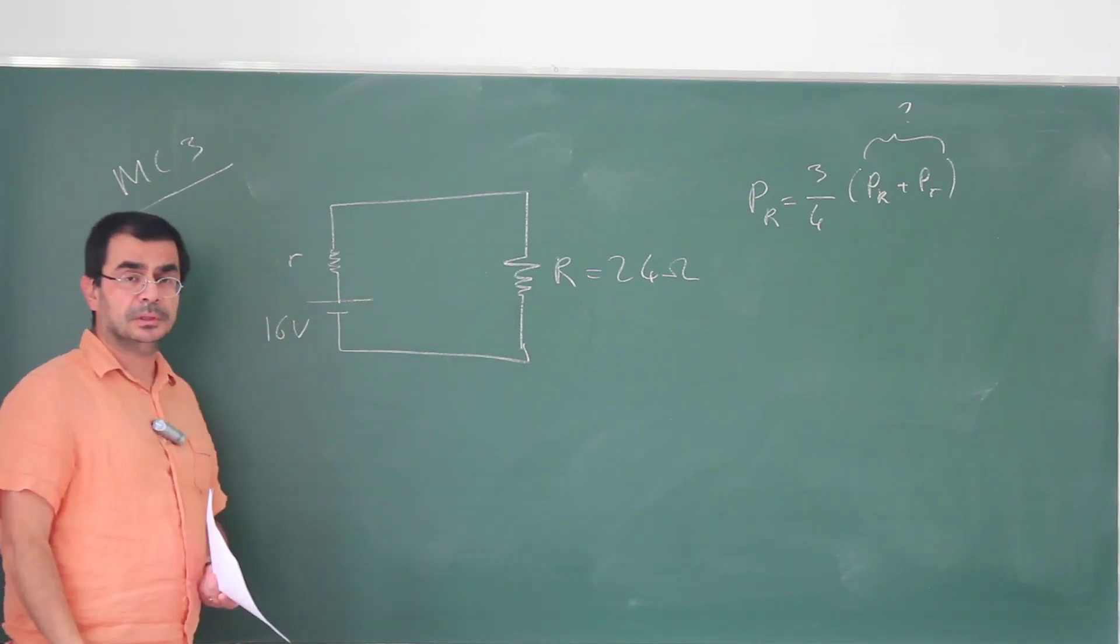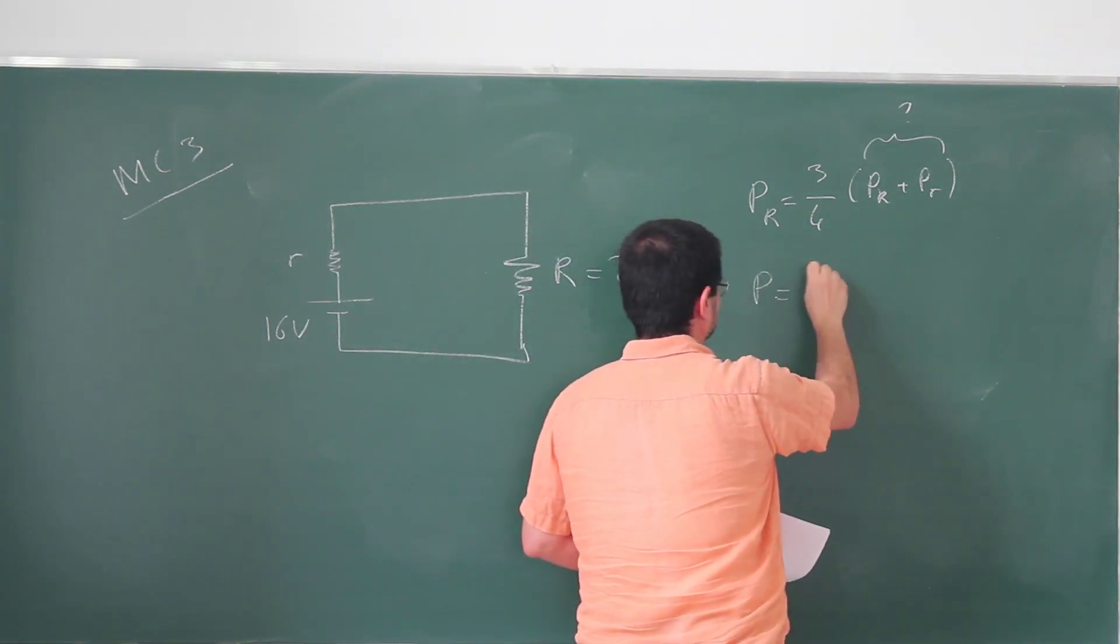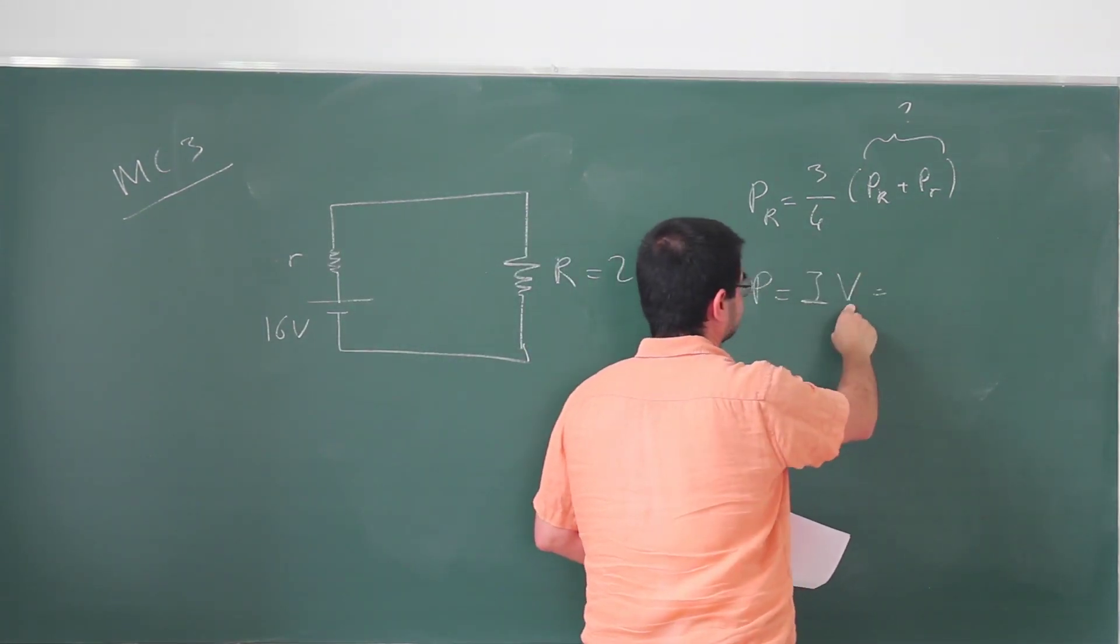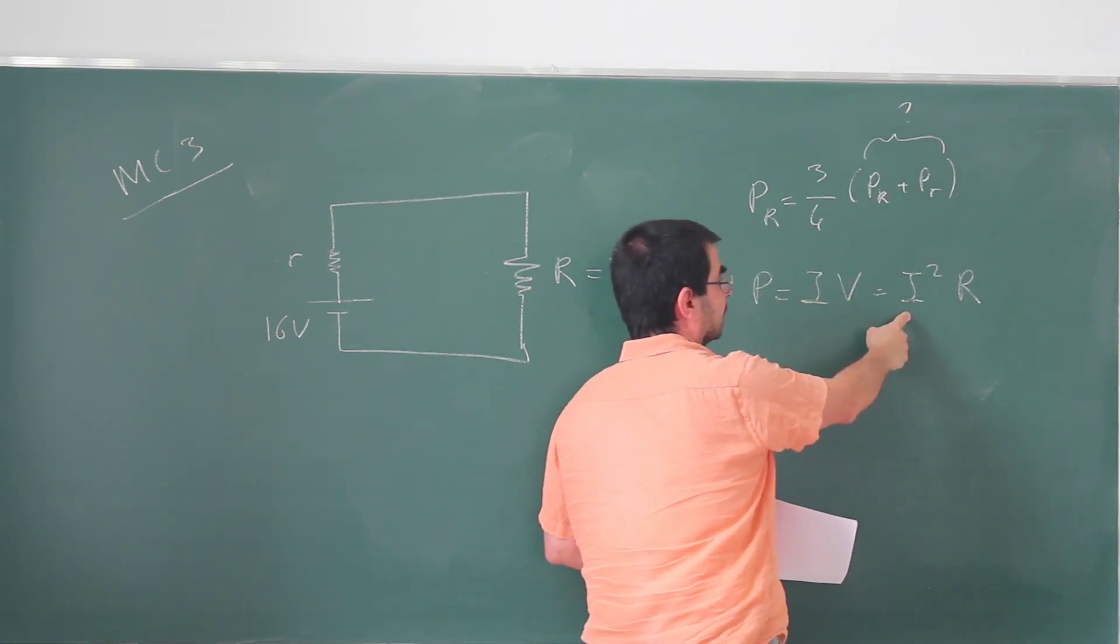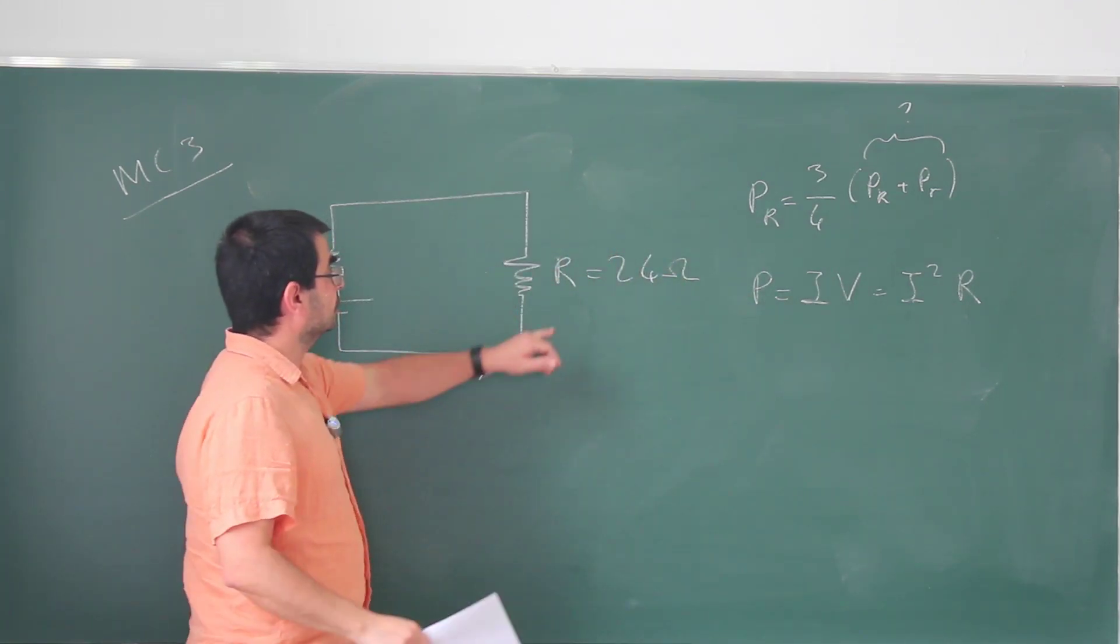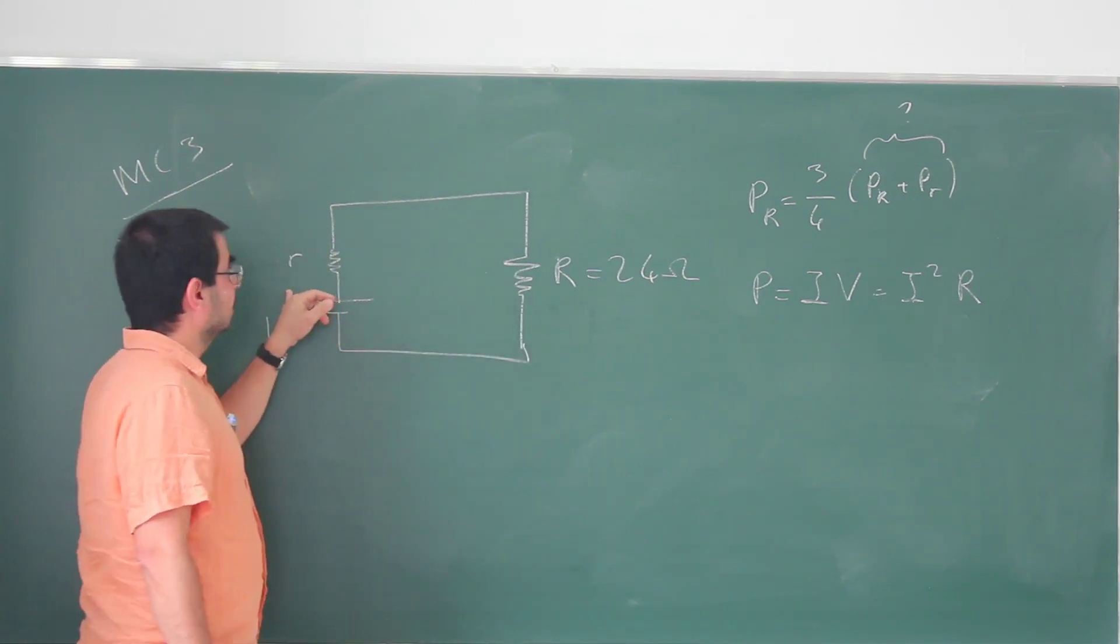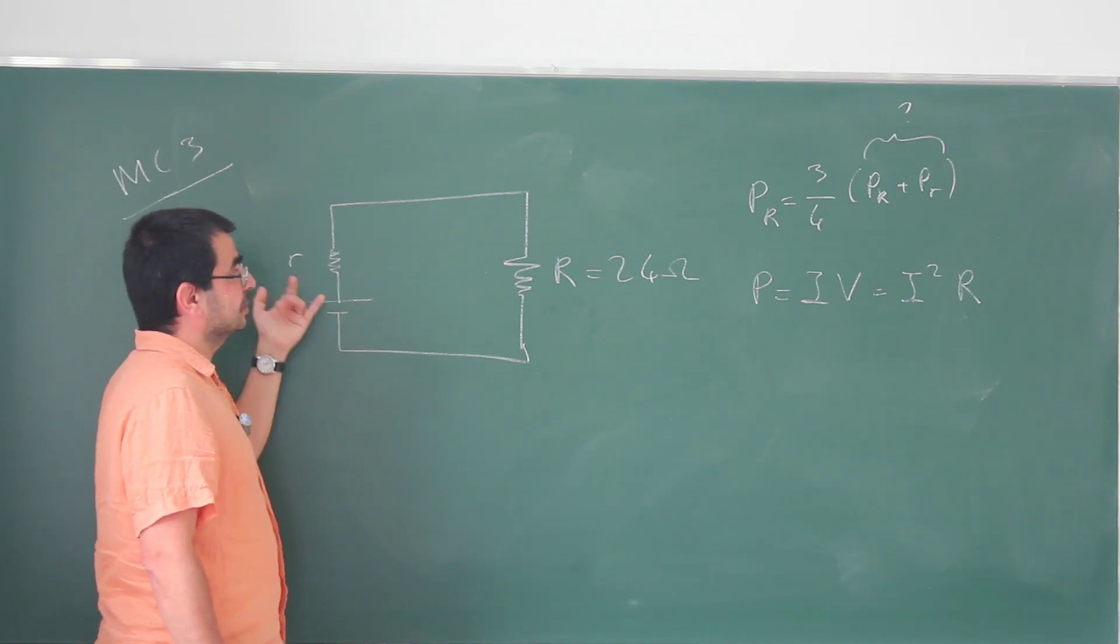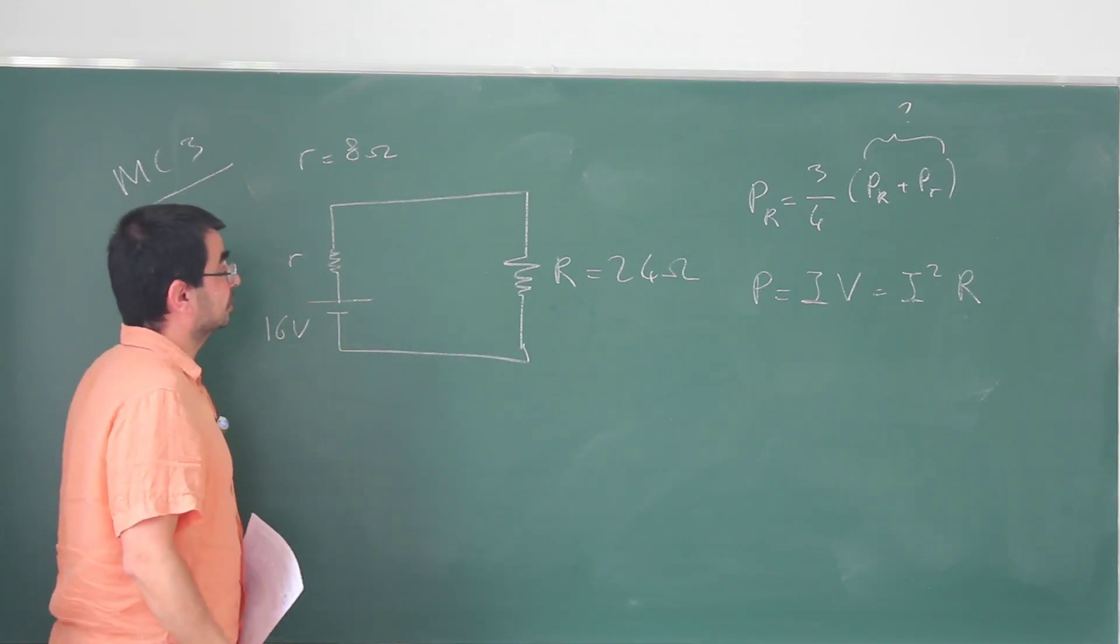These guys have the same current passing through them. The power is i times v, but v is i times r, so this is i squared times r. So for the same current, the larger the r, the larger the power dissipated. If this actually contains three-quarters of the total power, this must contain one-third of the power, so its resistance also must be one-third. So small r is eight ohms, because its power is one-third.